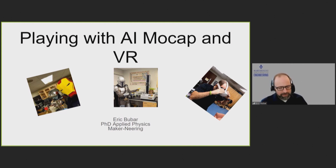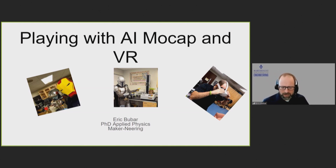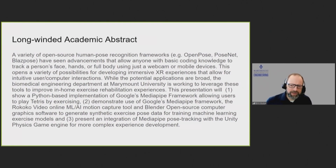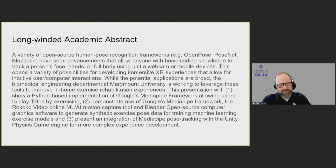My PhD is in applied physics, and our engineering program is brand new, started just last year. I'm using something I call "makerneering" — maker engineering, using maker technologies to just make cool stuff. This talk is about work I've been doing for about a year now in learning about AI, machine learning, and something called Open Computer Vision, which I didn't even know what that was until about a year ago. What I'm talking about with human pose recognition is a variety of different frameworks to identify key points like shoulders, hands, and faces on the human body.